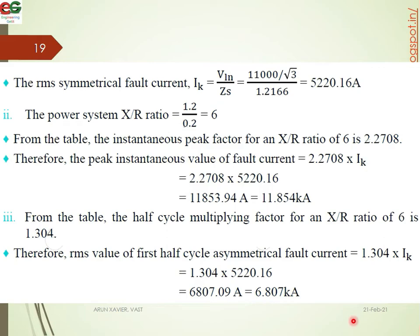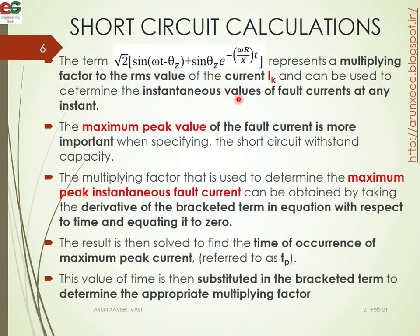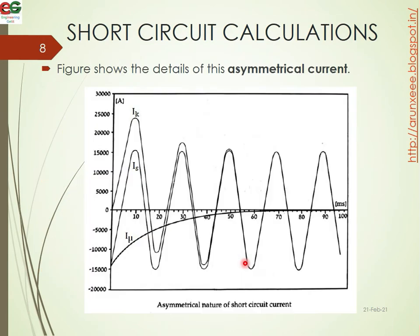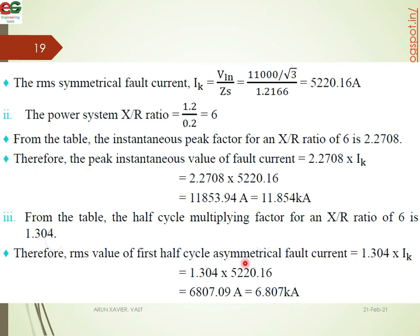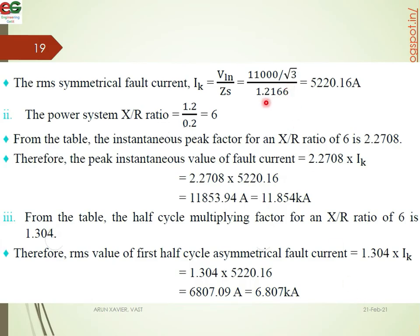The symmetrical fault current IK equals VLN divided by Z. VLN is the phase-to-neutral voltage of the 11 kV system, equal to 11,000 divided by √3. Dividing by Zs = 1.2166 ohm gives IK = 5220.16 amperes. This is the RMS symmetrical fault current.